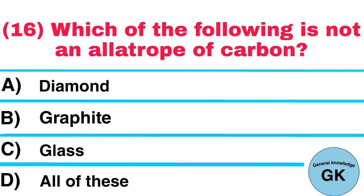Question number 16. Which of the following is not an allotrope of carbon? A. Diamond. B. Graphite. C. Glass. D. All of these. Answer: Glass.